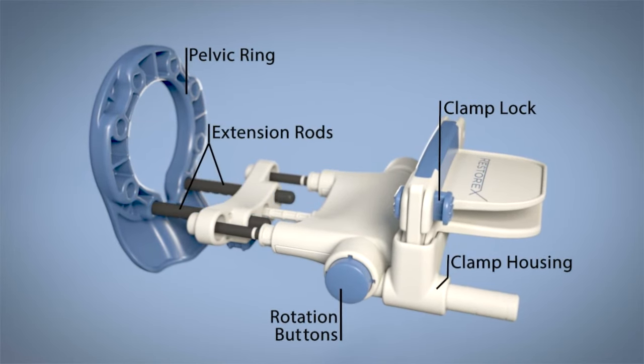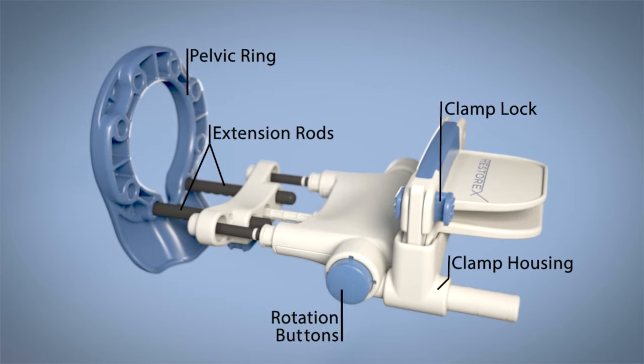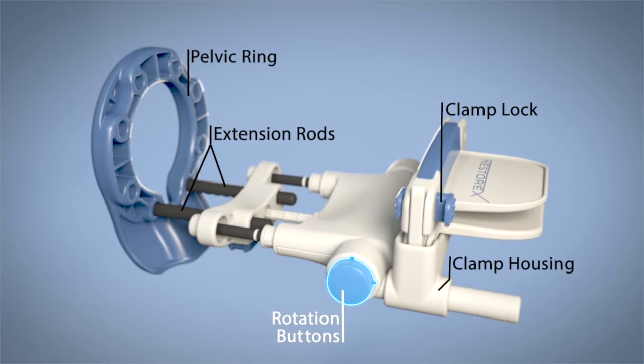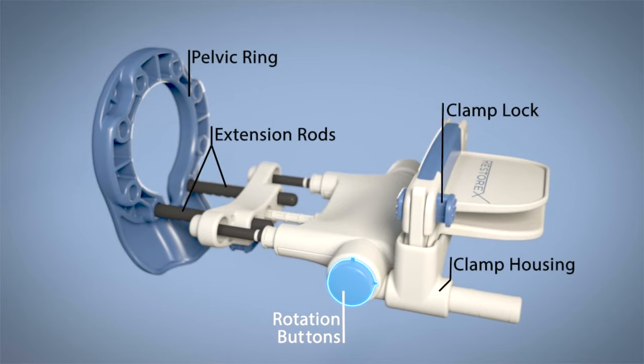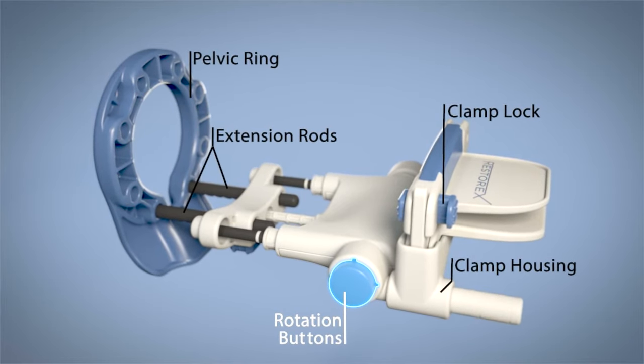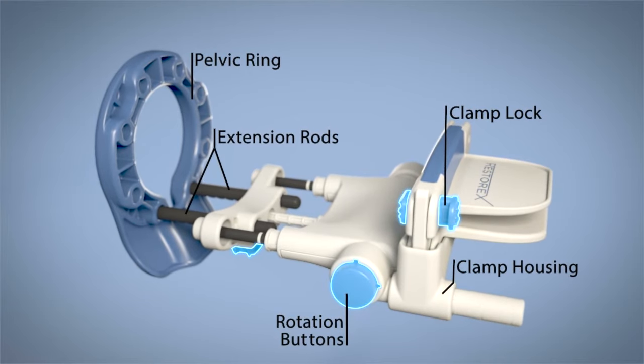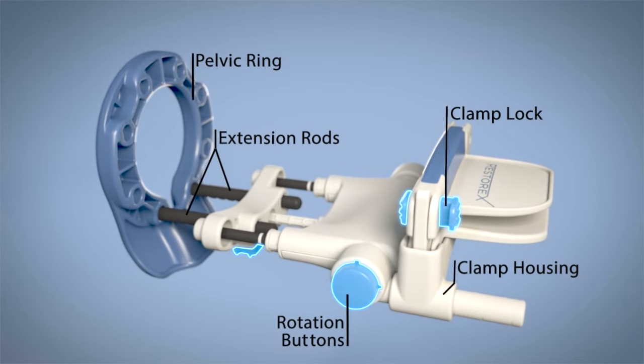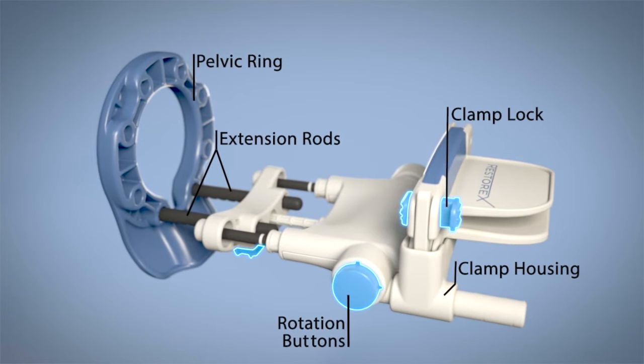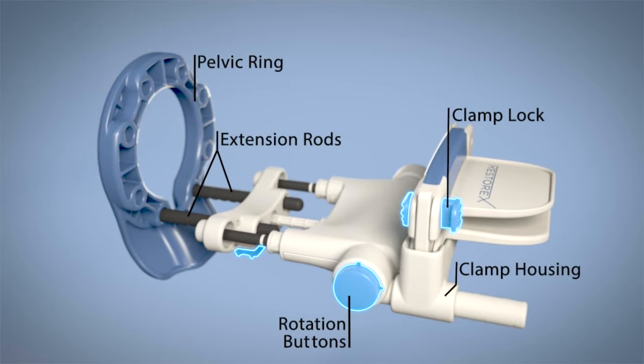The rotation buttons located on either side of the device are pushed simultaneously to rotate Restorex, providing opposite angular force to correct the curvature. The functional buttons are colored blue and are used to secure the clamp, release the extension rods, or rotate Restorex for opposite angular force.